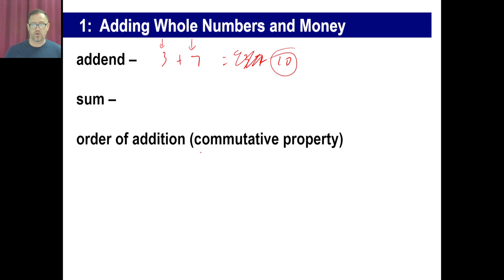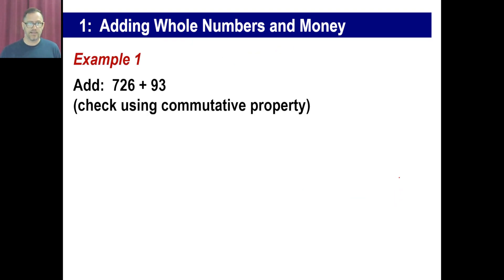Okay, order of addition doesn't matter. That's called the commutative property. So it doesn't matter if you say 3 plus 7 equals 10. Okay, you could reverse the order. 7 plus 3 also equals 10. Doesn't matter. You know, 8 plus 4 equals 84. No, I don't. Okay, 12. All right? So 4 plus 8 is also equal to 12. So it doesn't matter what order you add things in. Same thing with multiplication. We'll get to that later.